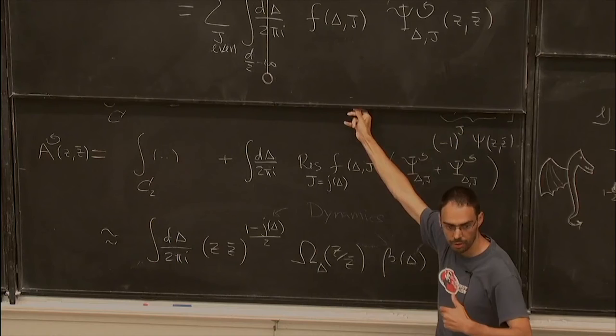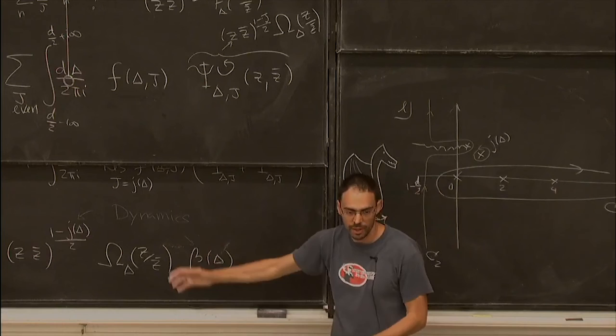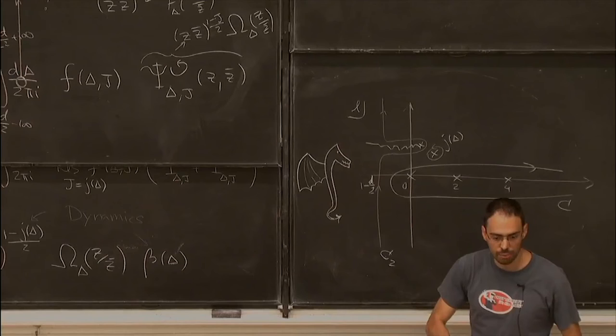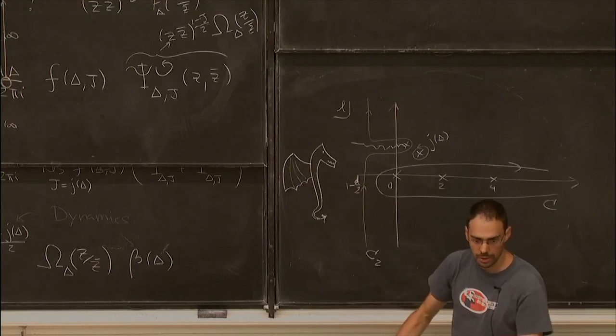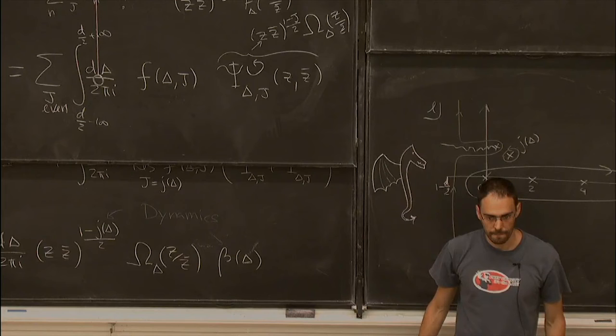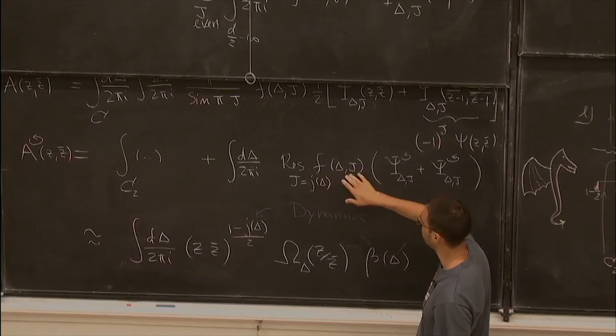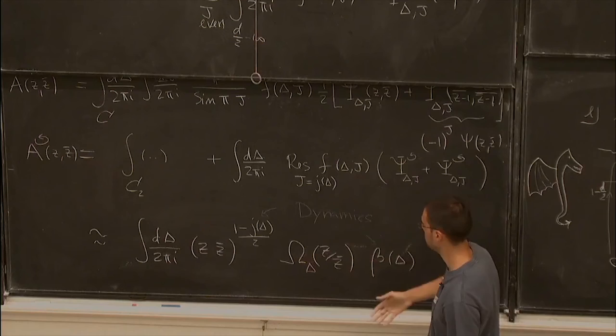Before the Lorentzian inversion formula, we would do these manipulations and just say: let's drop the contour at infinity and see what happens, assuming it drops out. Then we matched with perturbative calculations in N=4 super Yang-Mills and it was working. Now there is a conceptual breakthrough: we can actually verify that it works.